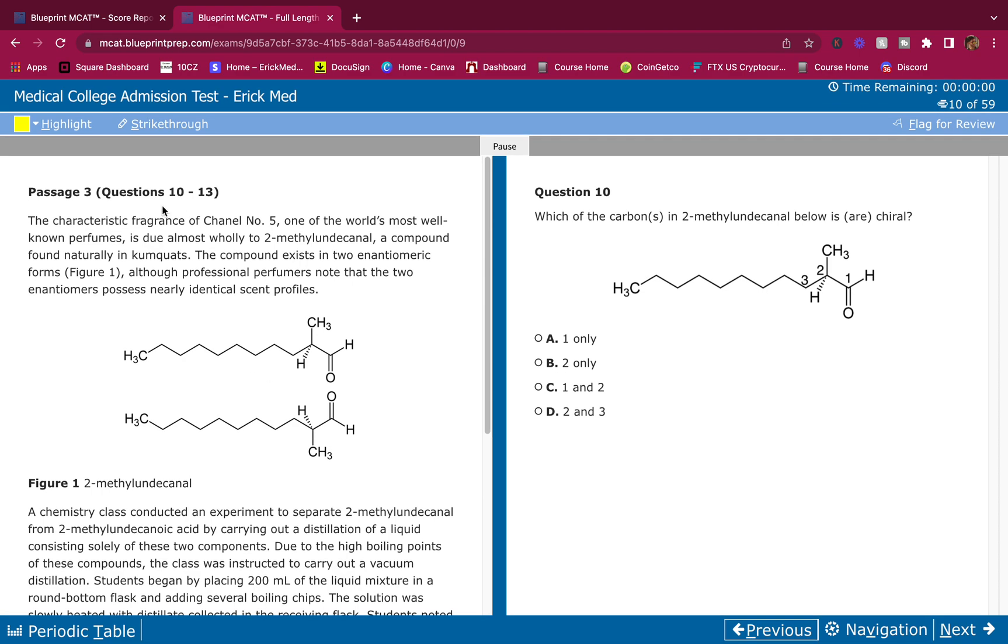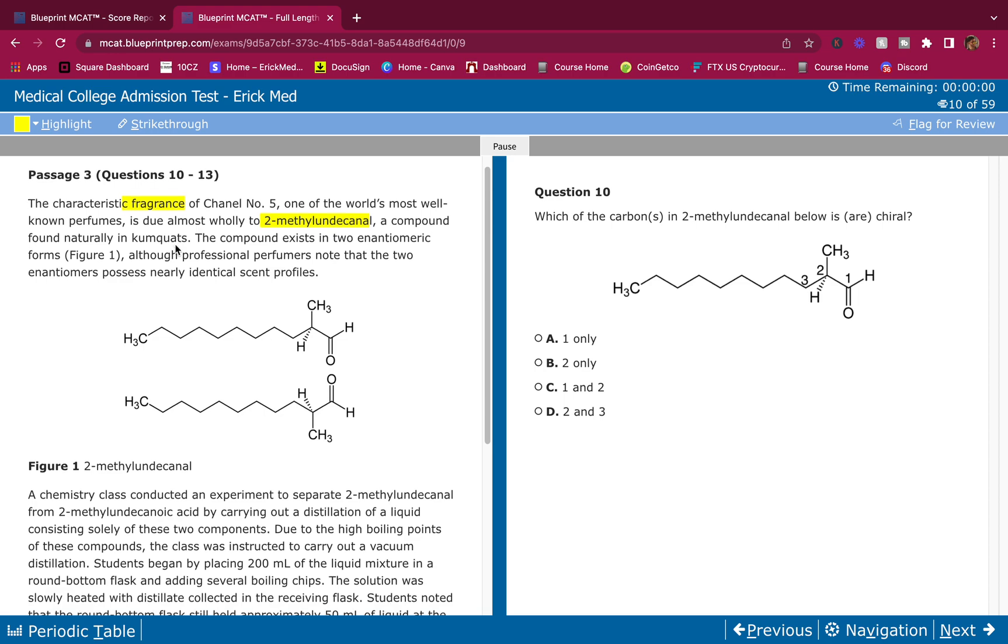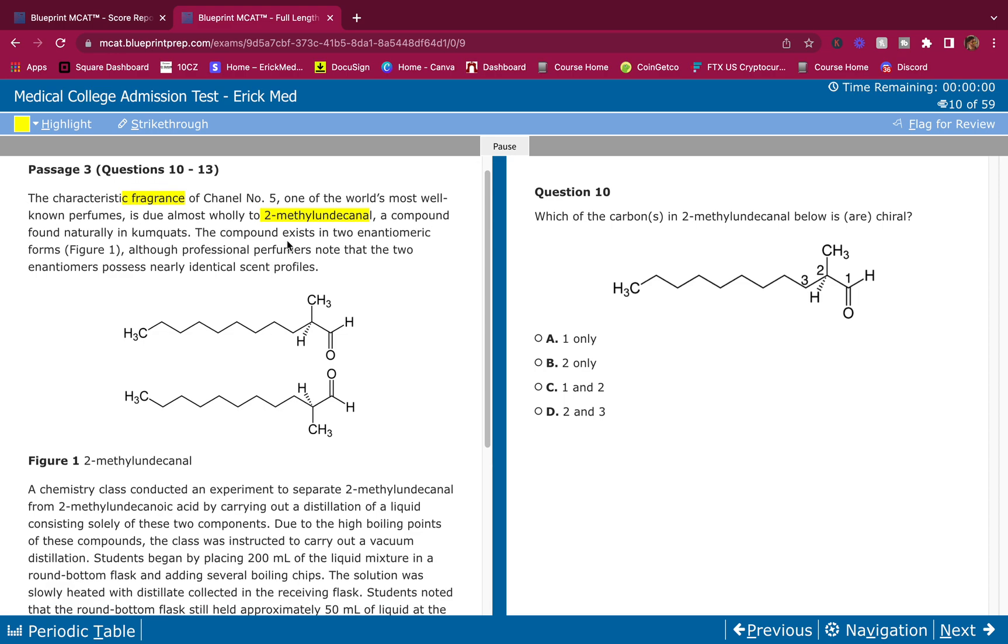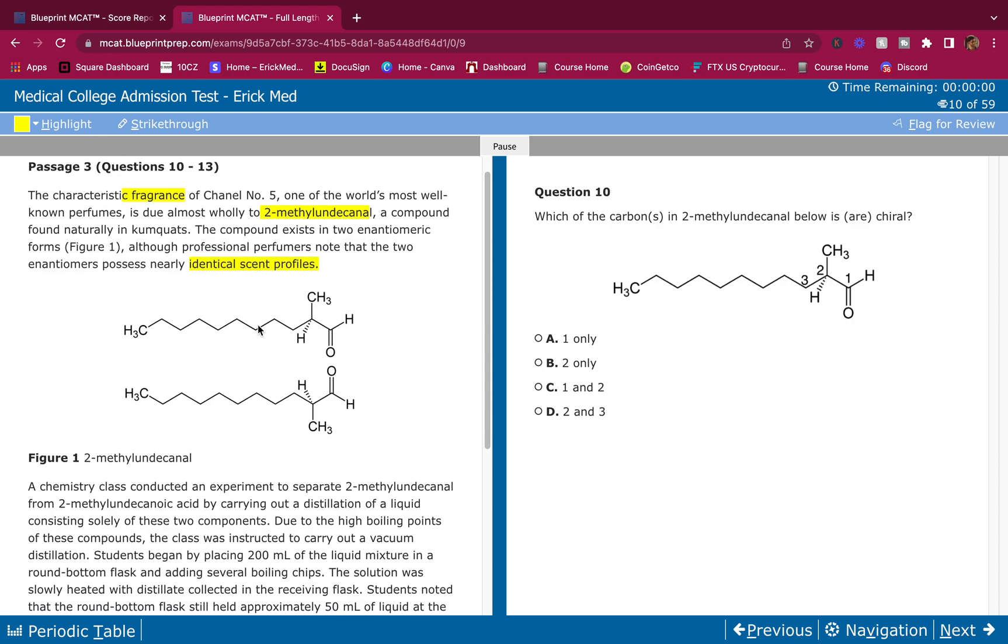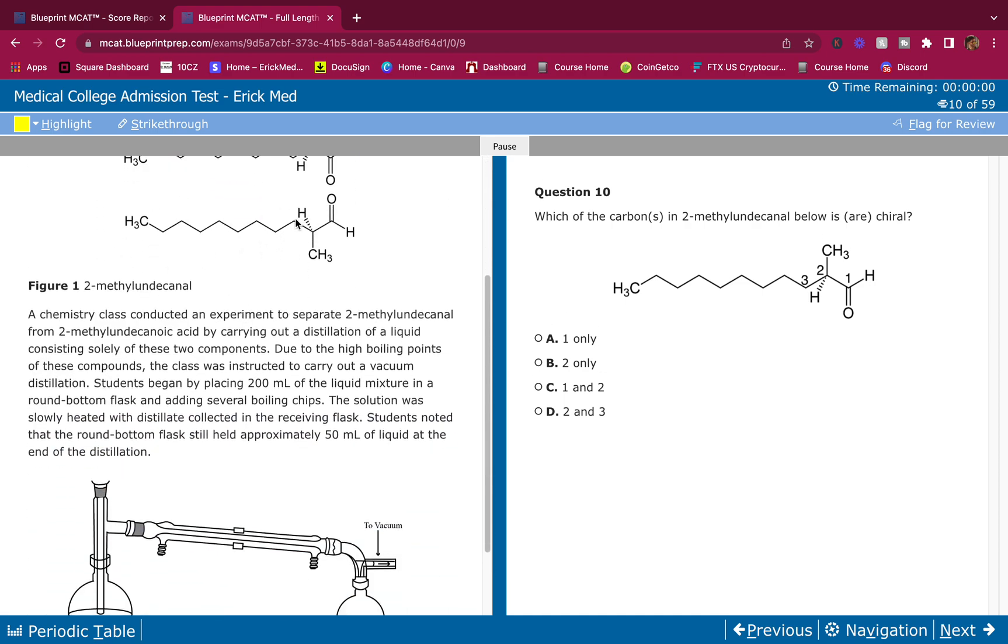This is how you break it down. The characteristic fragrance of Chanel number five, one of the world's most well-known perfumes, is due almost wholly to 2-methylundecanel. I'm going to highlight this - the fragrance is due to this compound, a compound found naturally in kumquats. The compound exists in two enantiomeric forms, although professional perfumers note that the two enantiomers possess nearly identical scent profiles. They're very similar in smell.